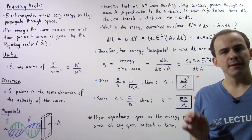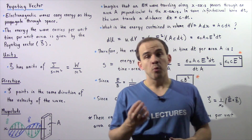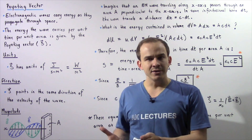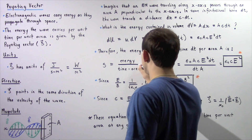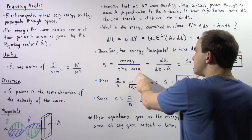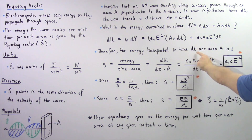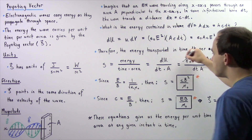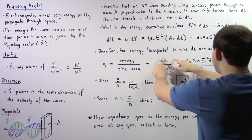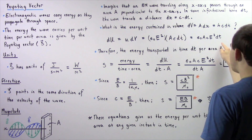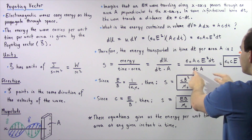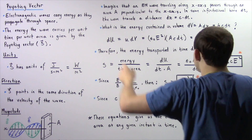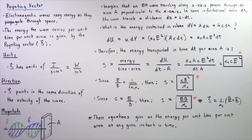Now we are ready to find the magnitude of the Poynting vector. The Poynting vector is the energy that passes per unit time per unit area, so S equals energy divided by time times area, or dU divided by dt times A. Substituting our expression for dU, the dt's cancel and the A's cancel, giving us the magnitude of the Poynting vector: S equals epsilon naught times c times E squared.